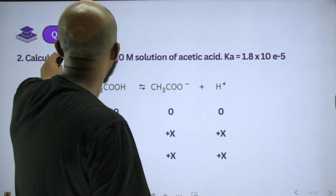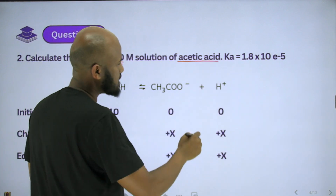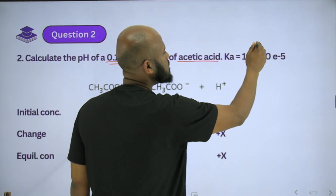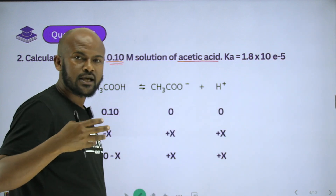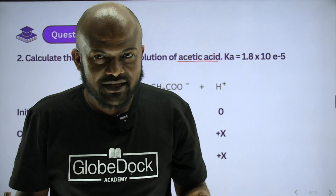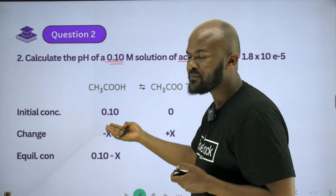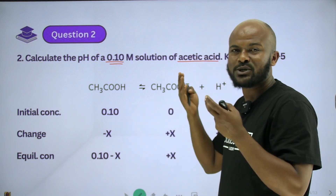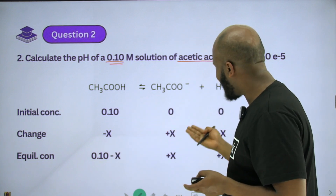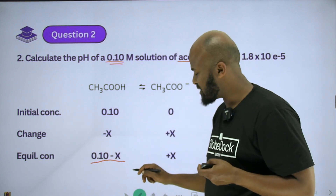Let's see another example. Calculate the pH of a 0.1 molar solution of acetic acid. The acid dissociation constant Ka of acetic acid is 1.8 times 10 to the minus 5. This uses the same ICE table strategy: initial concentration 0.1, change minus x and plus x, equilibrium 0.1 minus x and x.